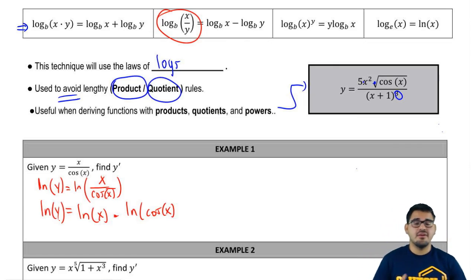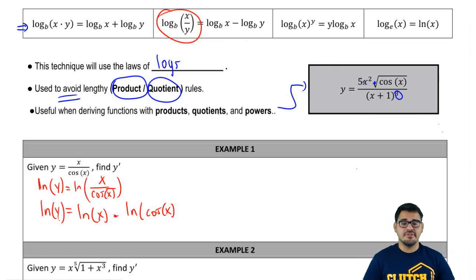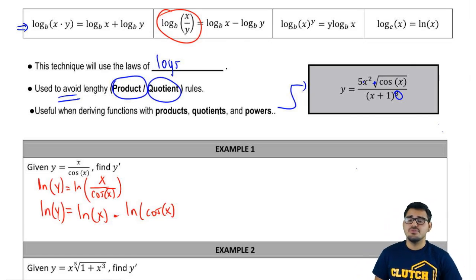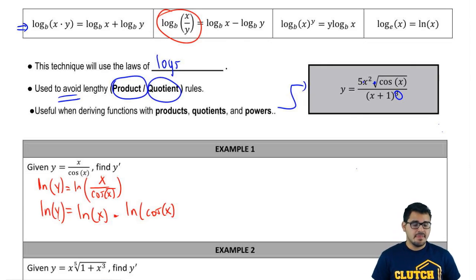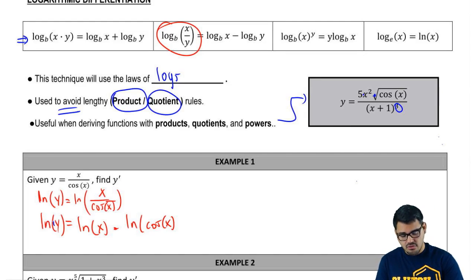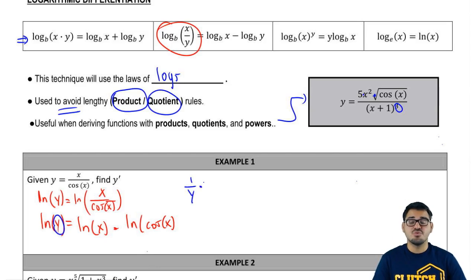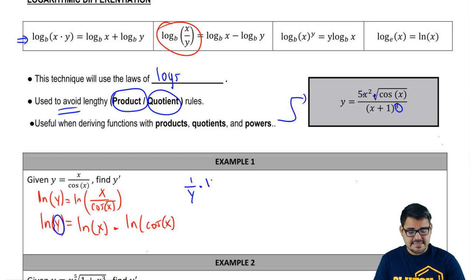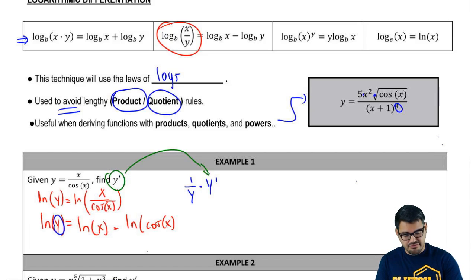Now, how do we go from here to finding y prime — the derivative? What we're going to do is derive both sides. Using the rules of ln, if I ask you to derive ln of y, we just treat it the same way: 1 over the angle times the derivative of the angle. That's going to be 1 over y times y prime. And we've found what we're looking for — our y prime.